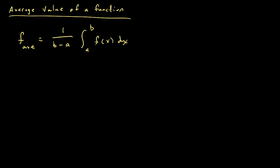Let's talk about finding the average value of a function. If you're given a bunch of data points, you can find the average by adding them all up and dividing by however many there are. But what if you have an infinite number between two numbers, say T1 and T2? If you have a function representing that data, the average value is 1 over b minus a times the integral of f of x dx from a to b.